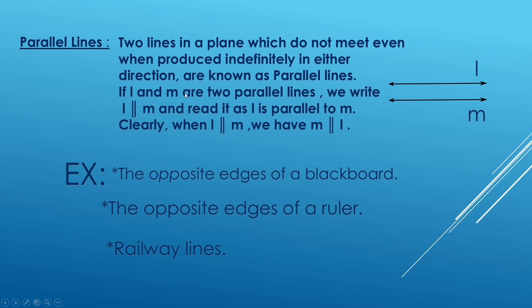If L and M are two parallel lines, we write L is parallel to M. This symbol is used to represent parallel lines and is read as L is parallel to M.